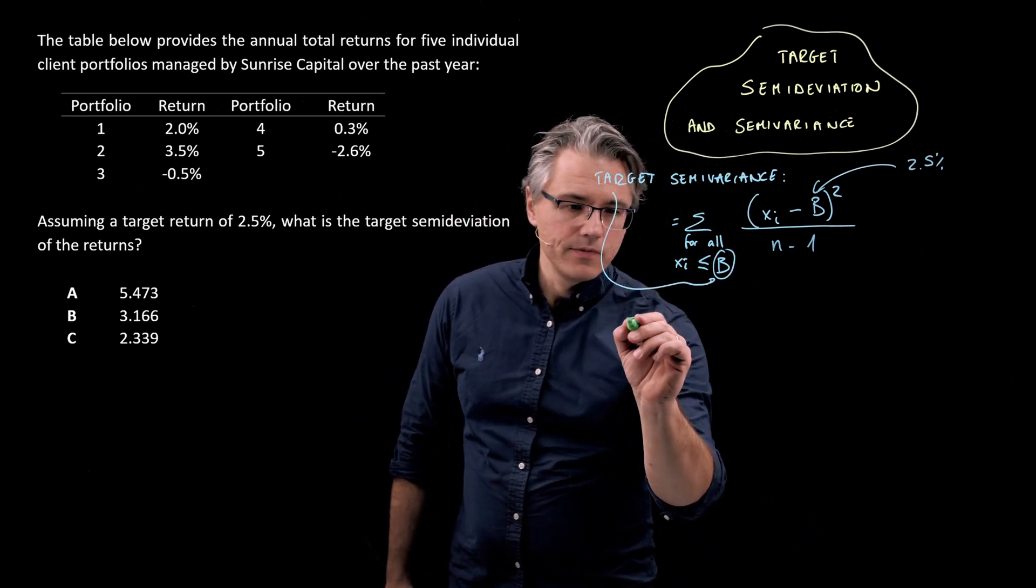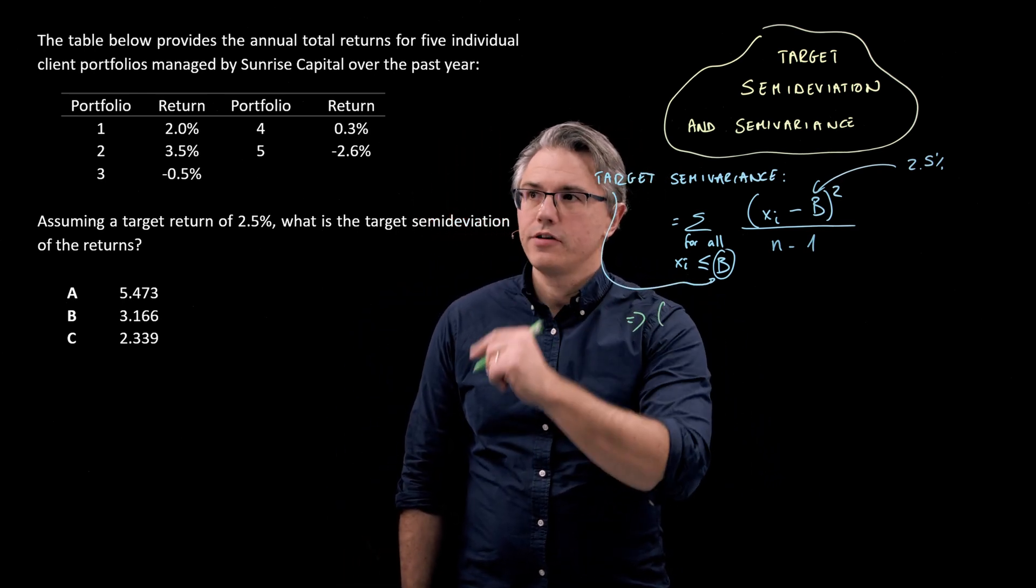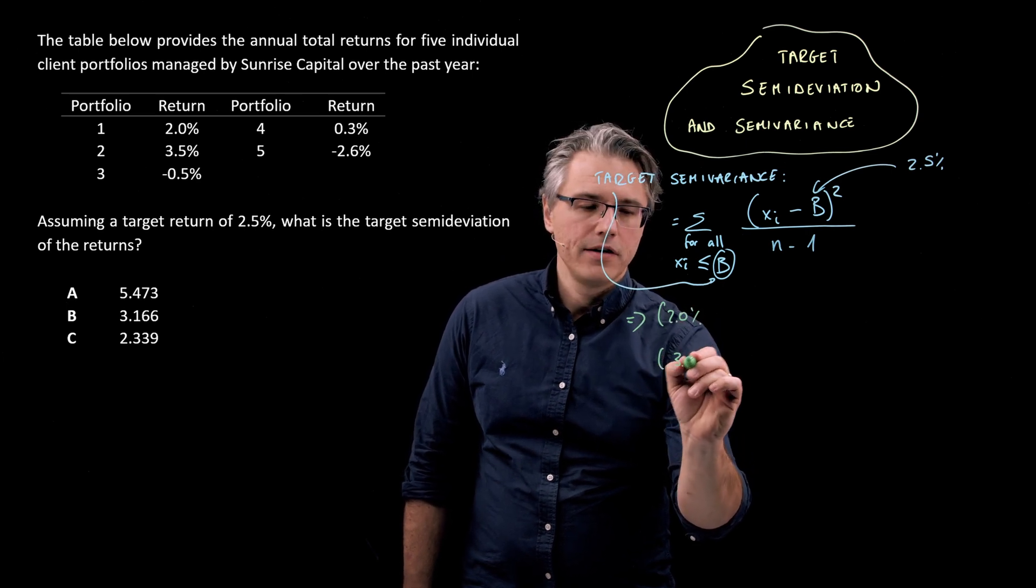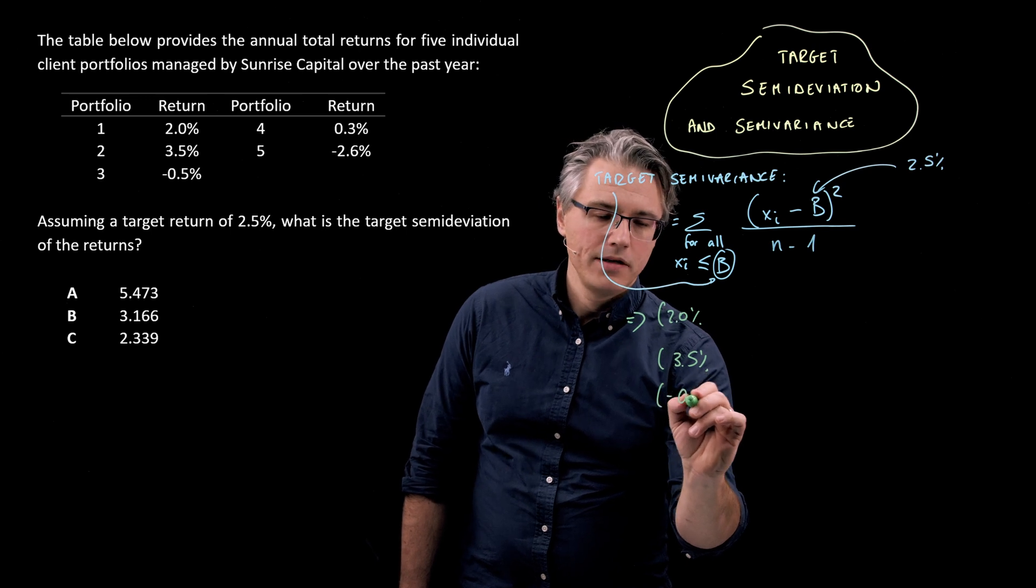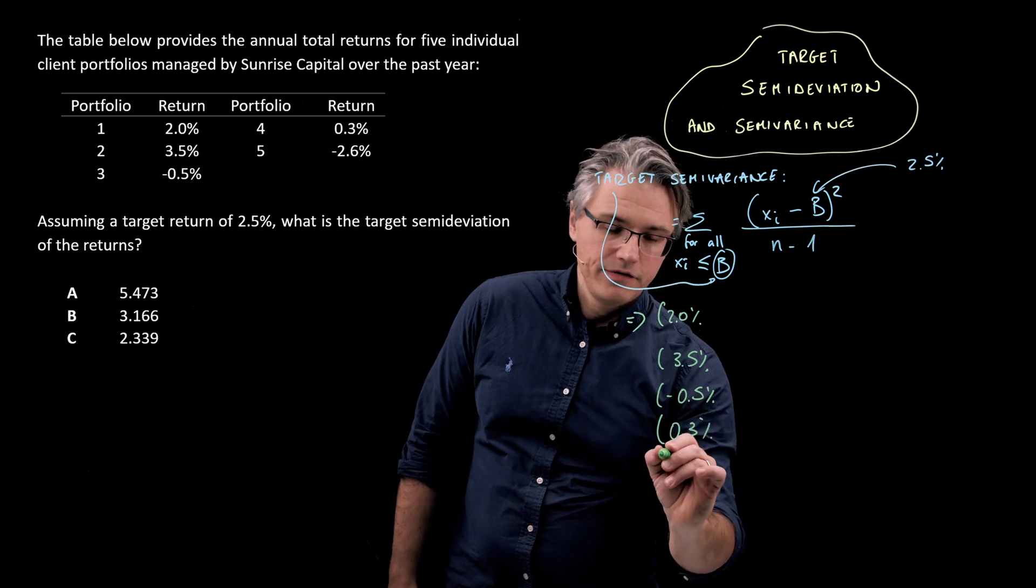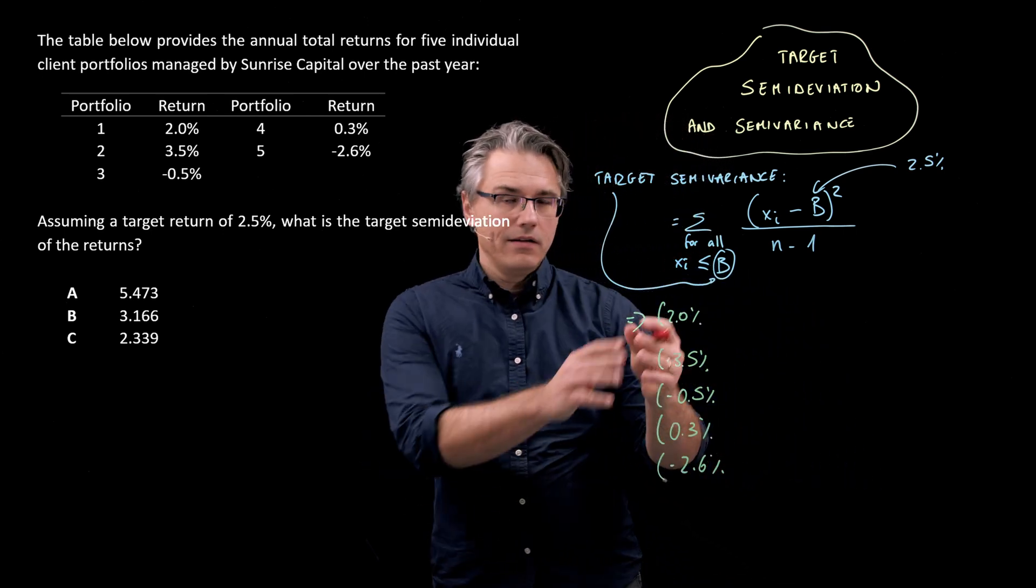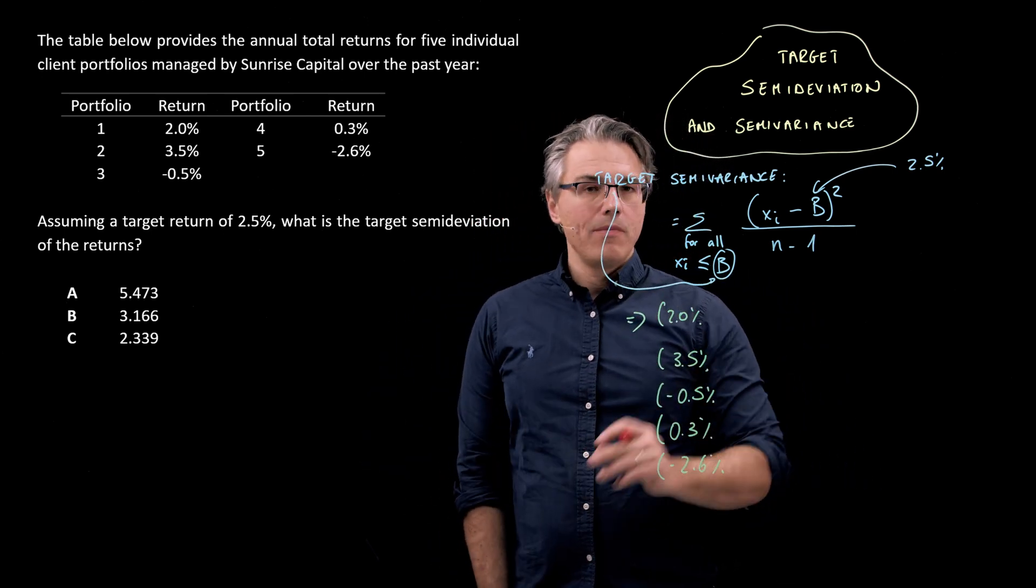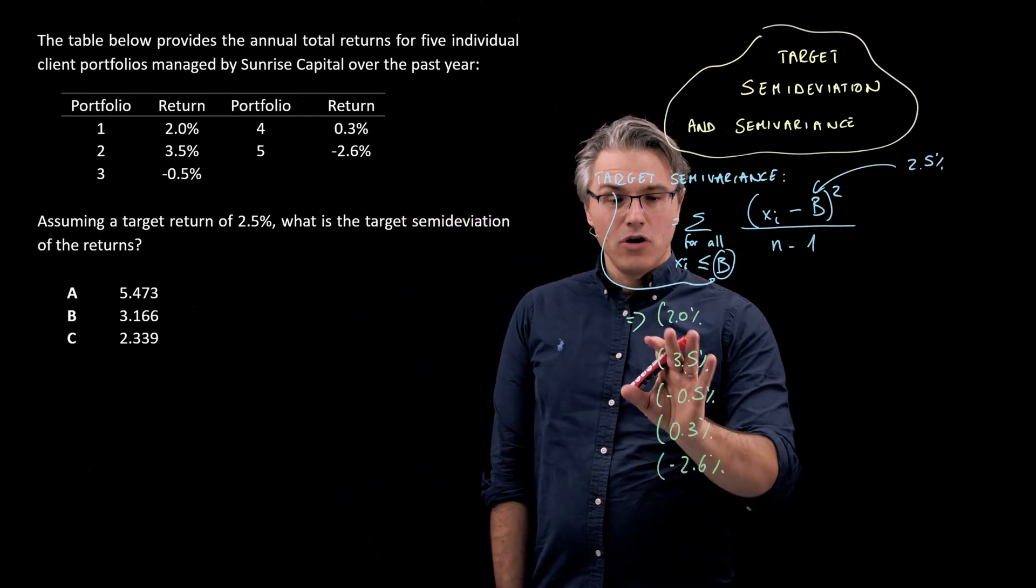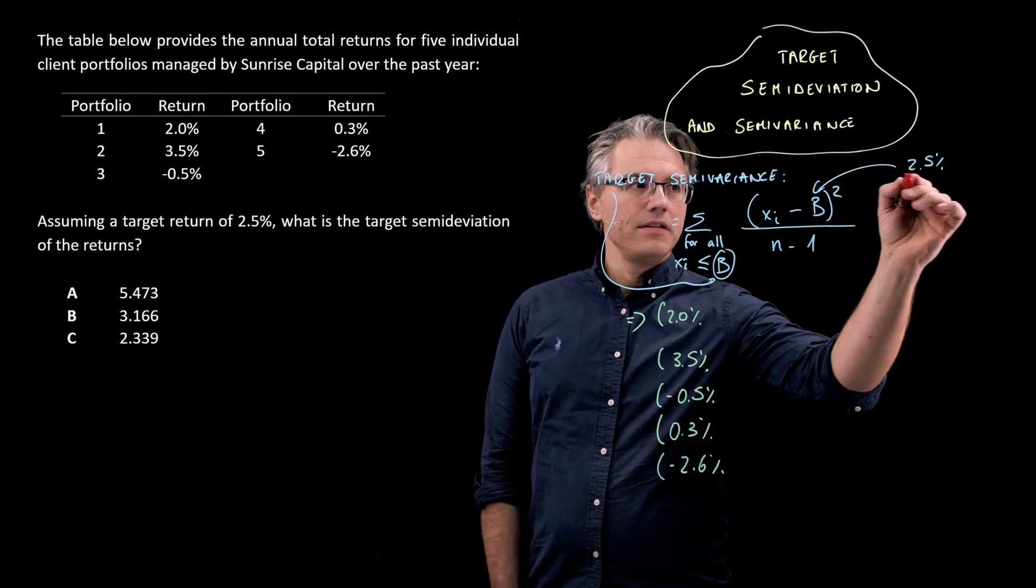So essentially what we'll need to do is write out the following for every possible return that we've got. So starting with 2%, then 3.5, then minus 0.5, 0.3, and finally minus 2.6. I'm going to compute a deviation from the target, but only for those observations that are below the value b. Now the value b is 2.5.